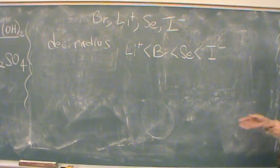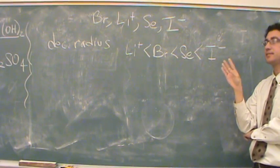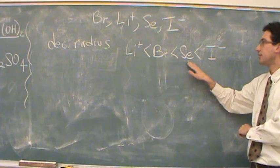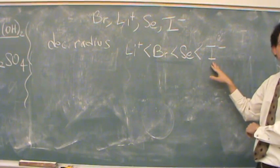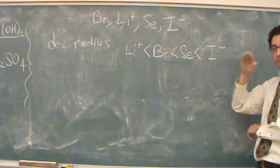So in general, you're going to rank the cations as the smallest. And then the neutrals, you just follow the same pattern of radius. And then the largest one, the anions, you're going to put as the largest.